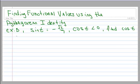All right, second example, finding functional values using the Pythagorean identity. So this is the same as example A, but it has different values.